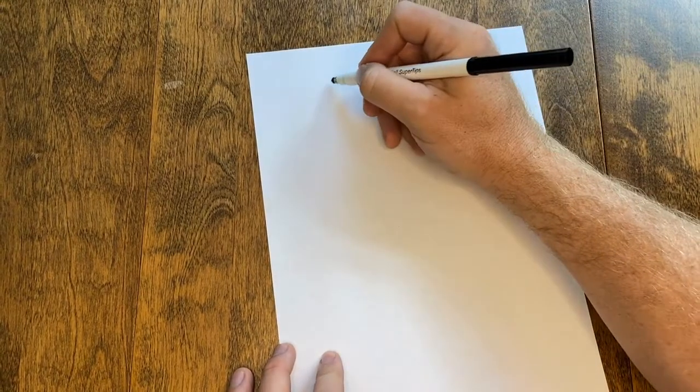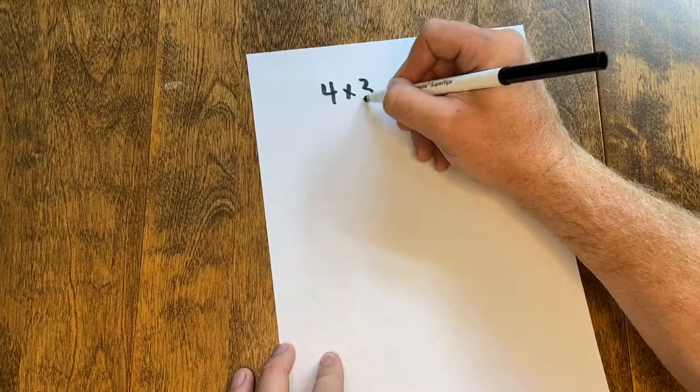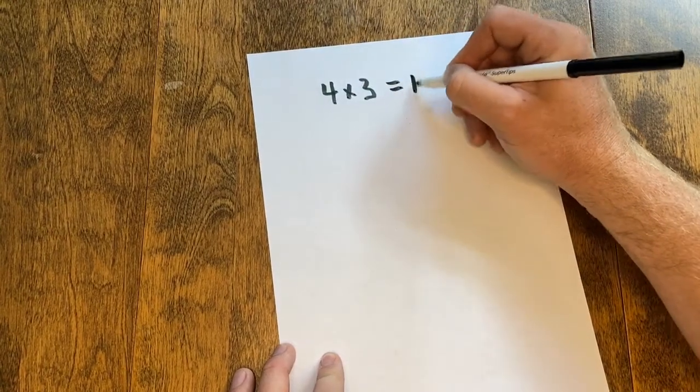The key to multiplying with multiples of 10 is to simply use the basic fact. For example, 4 times 3 is 12.